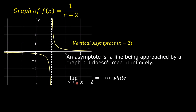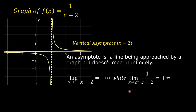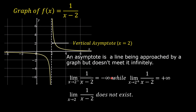When we evaluated the limit of 1 over x minus 2 as x approaches 2 from the left, we found that the function approaches negative infinity. Since the function approaches negative infinity from the left and positive infinity from the right, these two values are not equal. Therefore, the limit of 1 over x minus 2 as x approaches 2 does not exist.